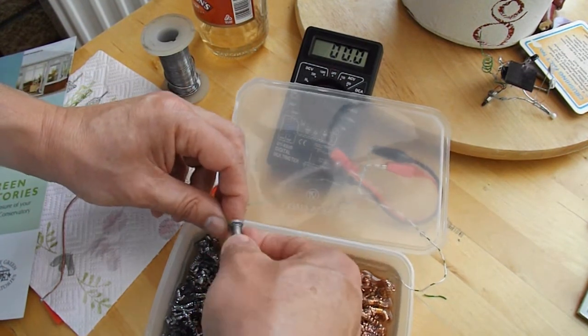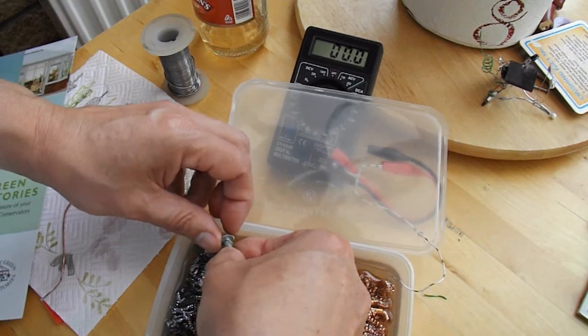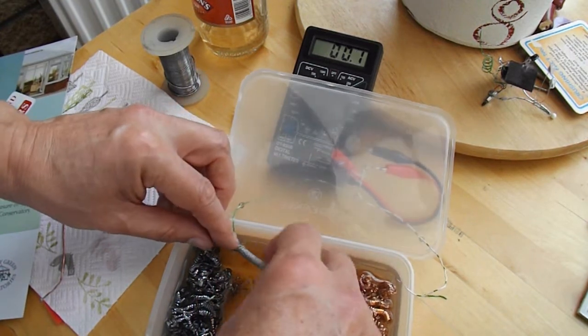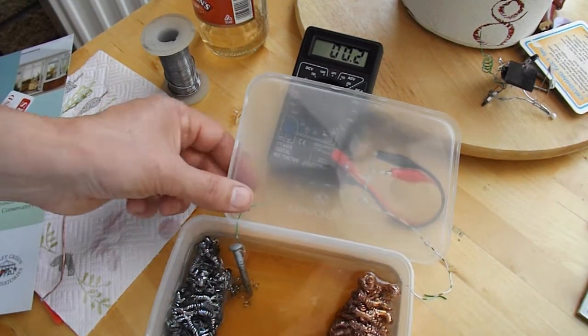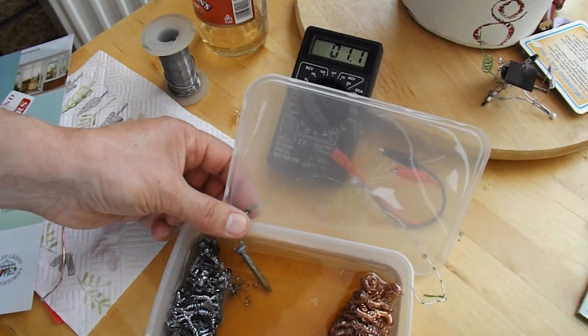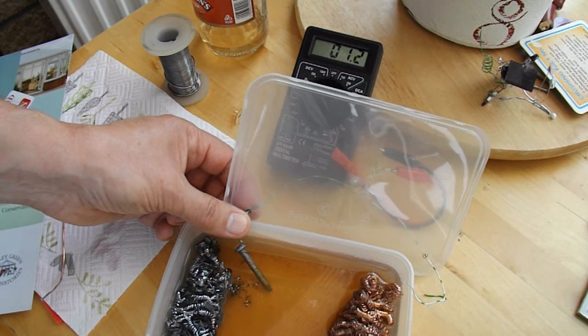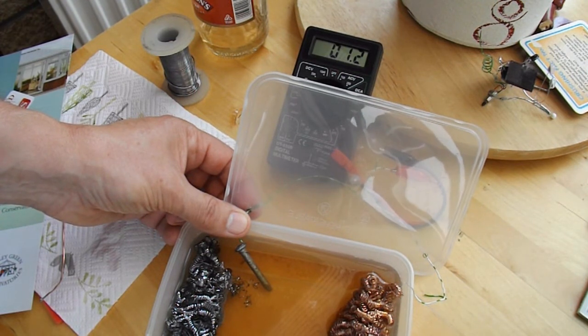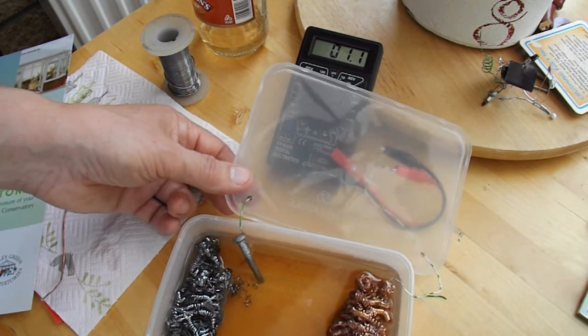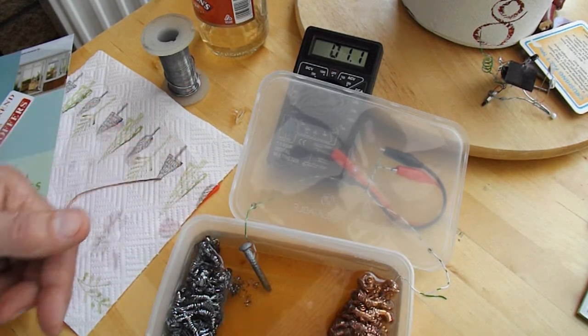Connect the negative side back to the zinc nail. And we're getting a positive current flow. No idea what the metals are that we've got here in these pan scourers.